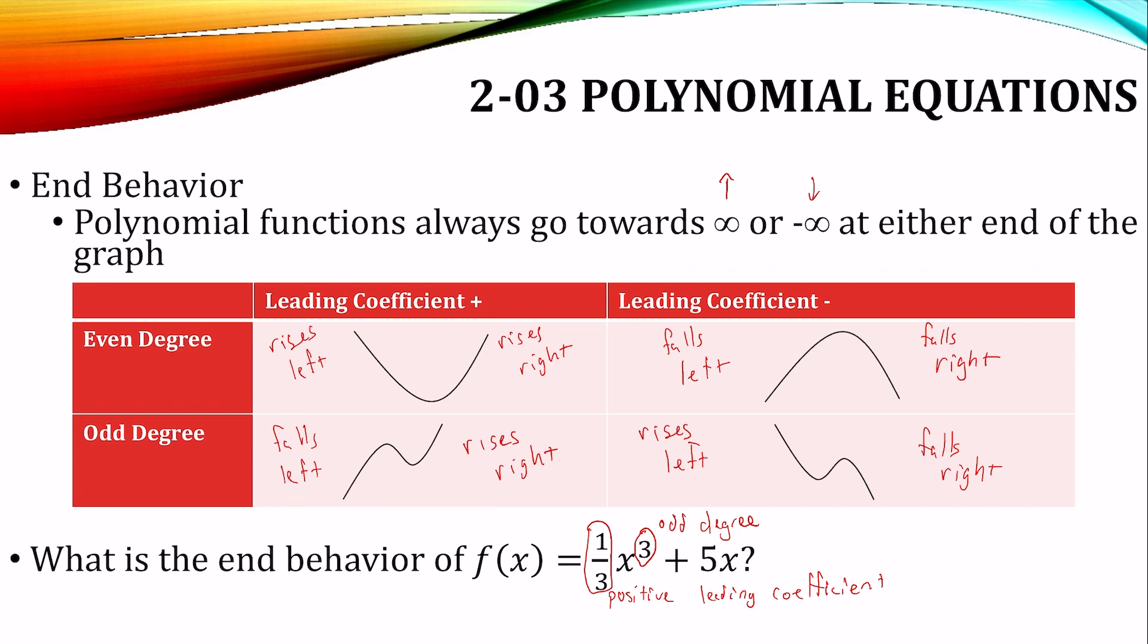So it's the odd degree, positive leading coefficient. That is this one right there. So the end behavior is it falls to the left and it rises to the right. It goes down on the left, up on the right.